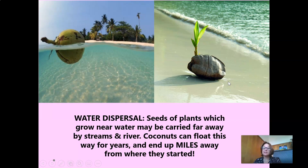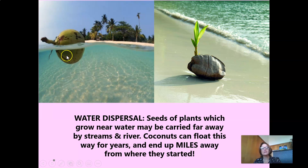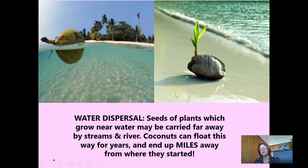Water dispersal: seeds of plants which grow near water may be carried far away by streams and rivers. Coconuts can float this way for years and end up miles away from where they originally started. They're buoyant because they're hollow inside. So the next time you eat a coconut, think about how far that coconut has traveled to get to your table — and here you can see a coconut seed starting to germinate and develop.